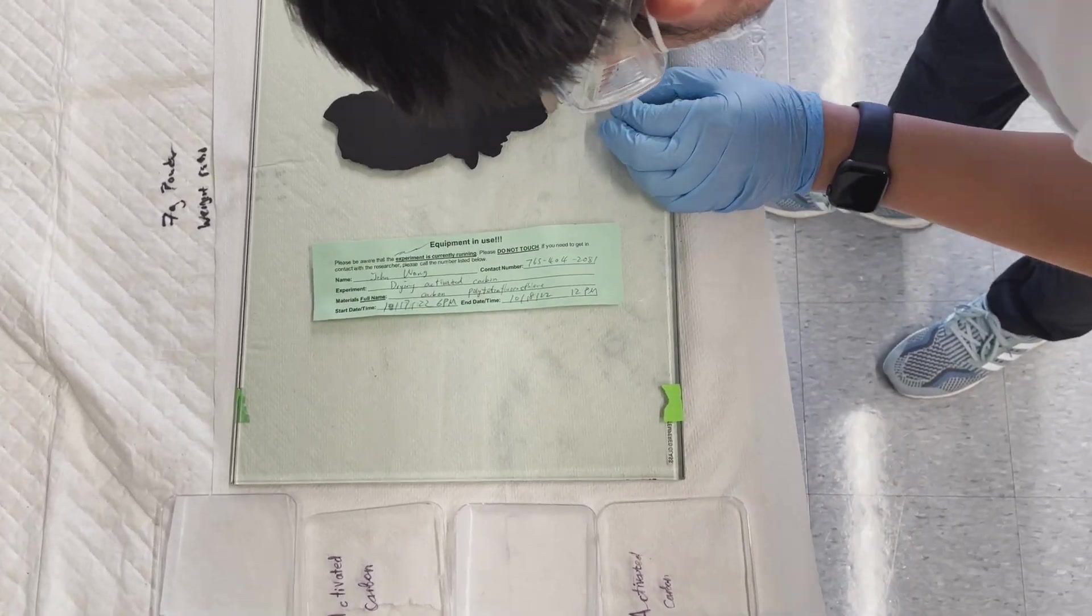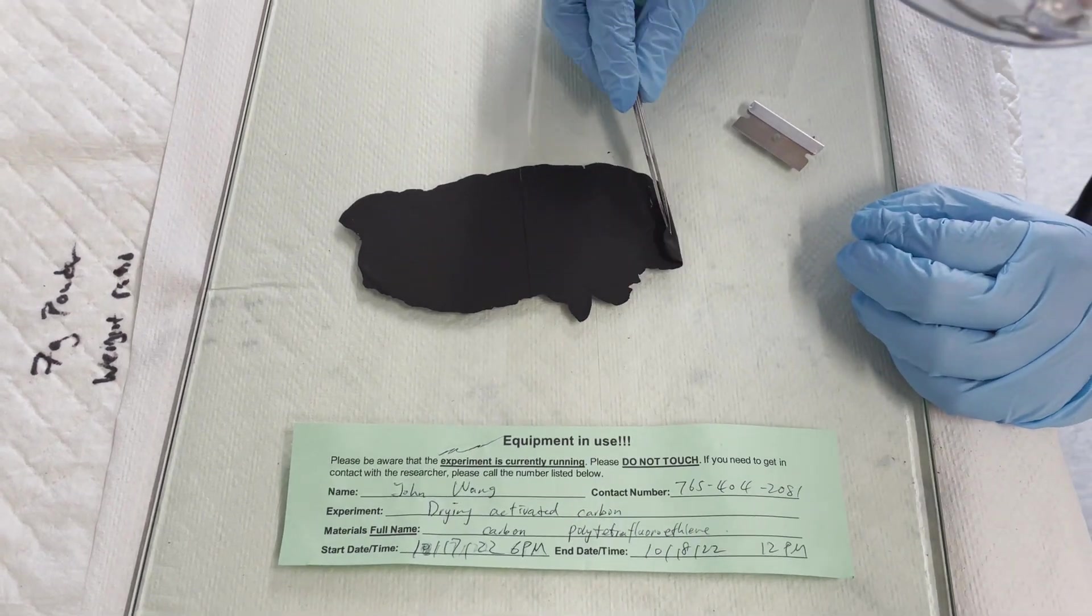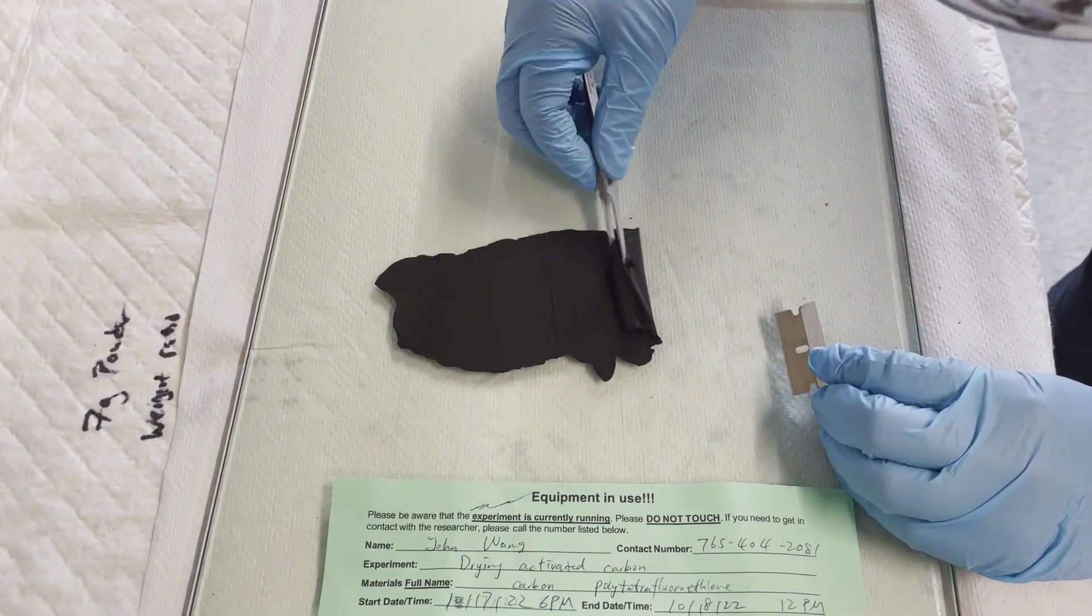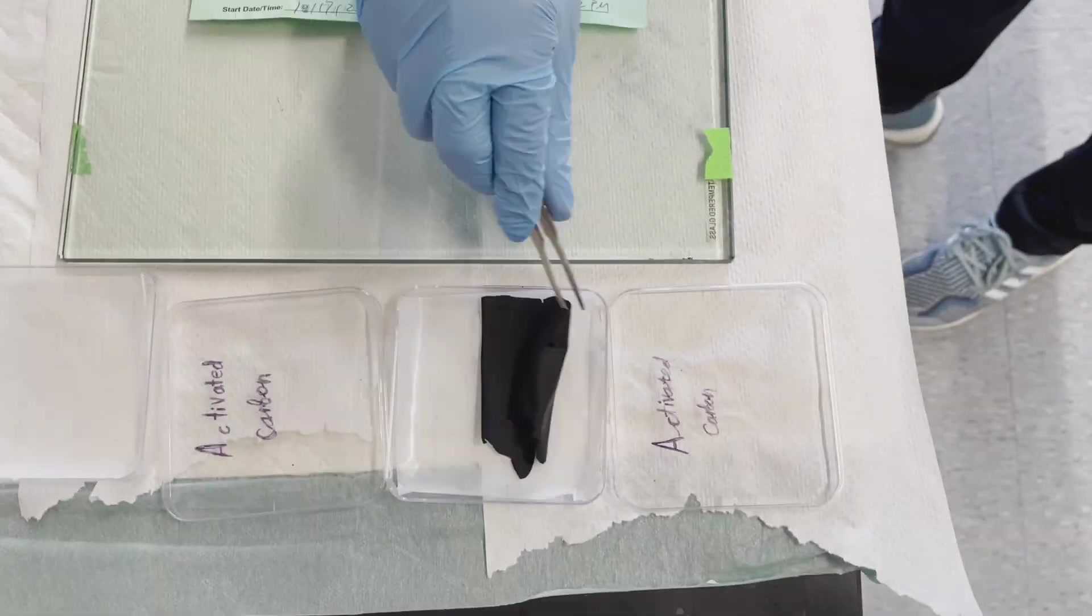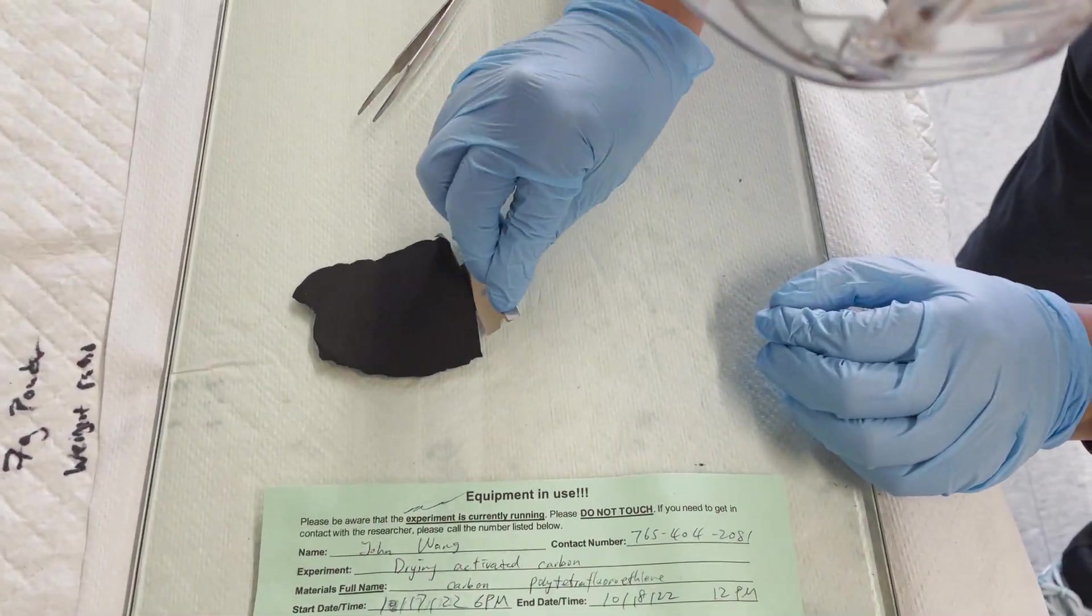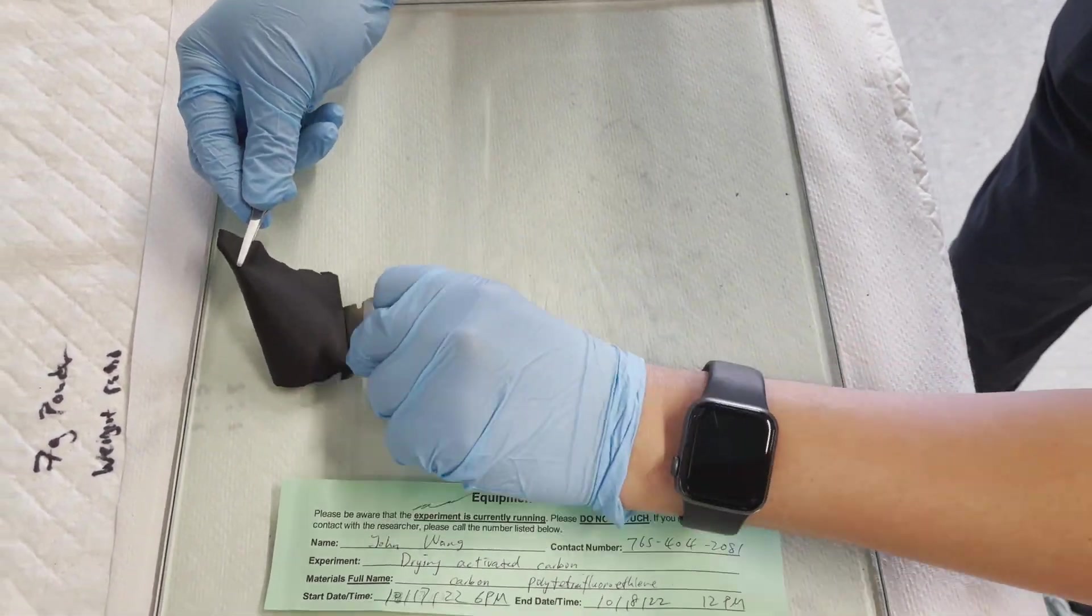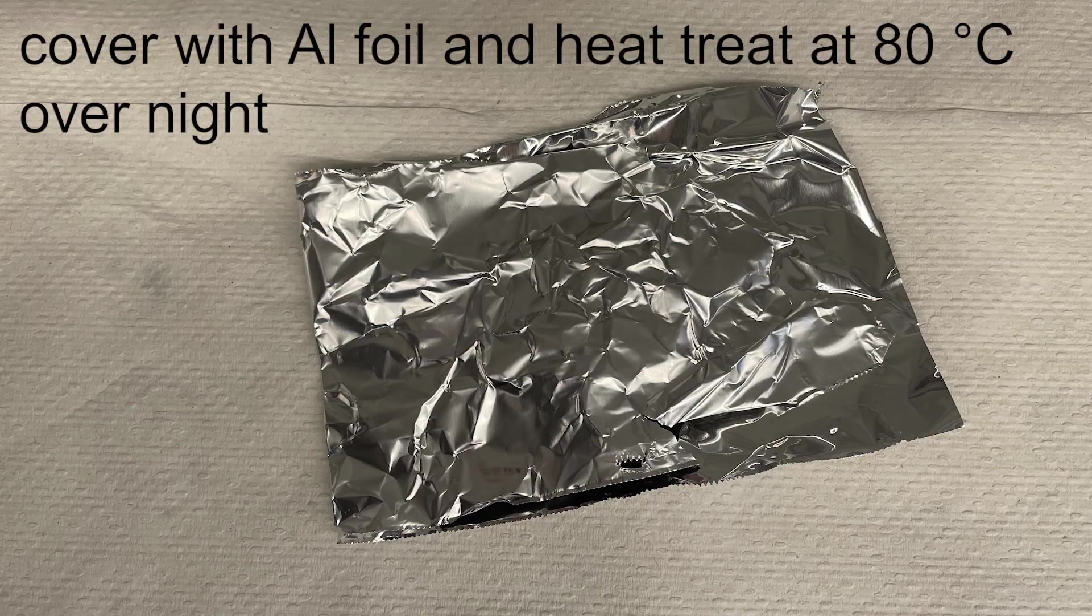The next day, we can peel off the carbon film with a razor blade and a pair of tweezers. Heat treat the carbon film at 80 degrees Celsius overnight.